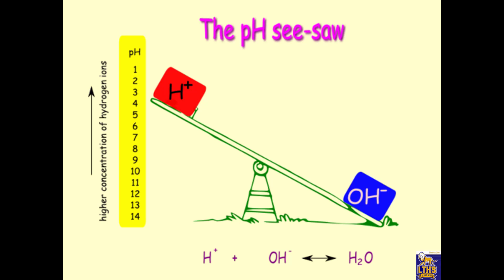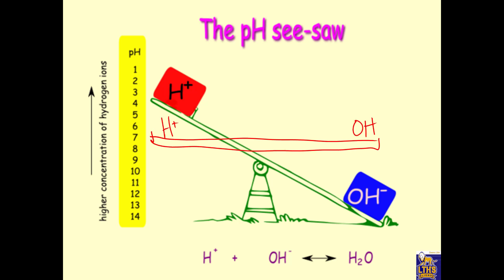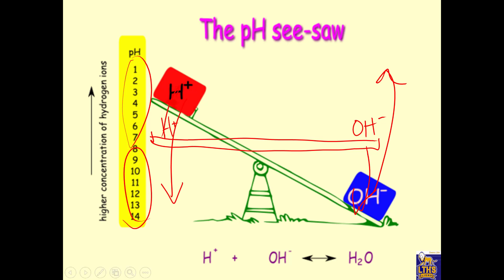So what happens when you add acid to water, or when you add base to water? If you add acid to water, you're going to get more hydrogen ion, so pH is going to go to 1, 2, 3, or 4 — a small number. You have less hydroxide. If hydrogen goes up, hydroxide goes down, and pH goes between 1 and 7. If hydrogen goes down, hydroxide goes up, and pH is a higher number.